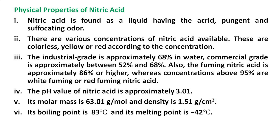Physical Properties of Nitric Acid: Nitric acid is a liquid with an acrid, pungent, and suffocating odor. It is available in various concentrations, appearing colorless, yellow, or red depending on concentration. The industrial grade is approximately 68% in water, commercial grade is 52–68%, and fuming nitric acid is approximately 86% or higher. Concentrations above 95% are white fuming or red fuming nitric acid. Its pH is approximately 3.01, molar mass is 63.01 g/mol, and density is 1.51 g/cm³.